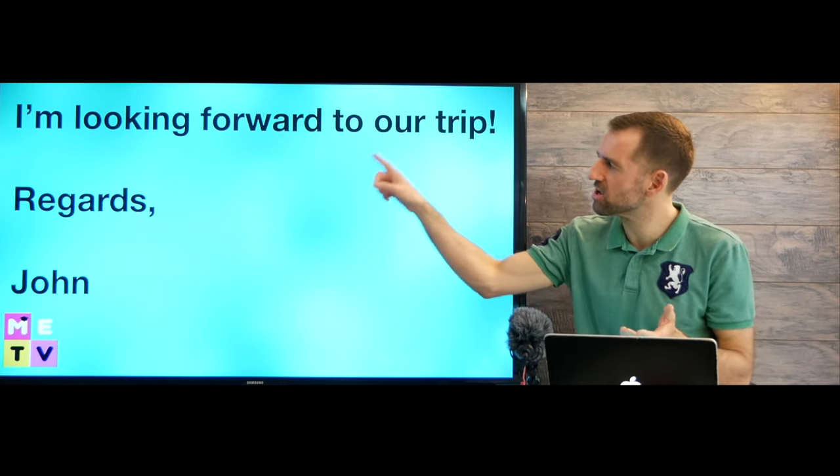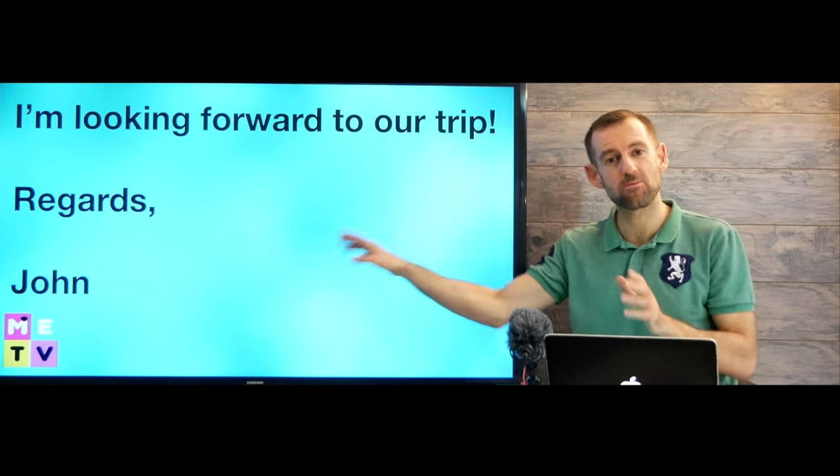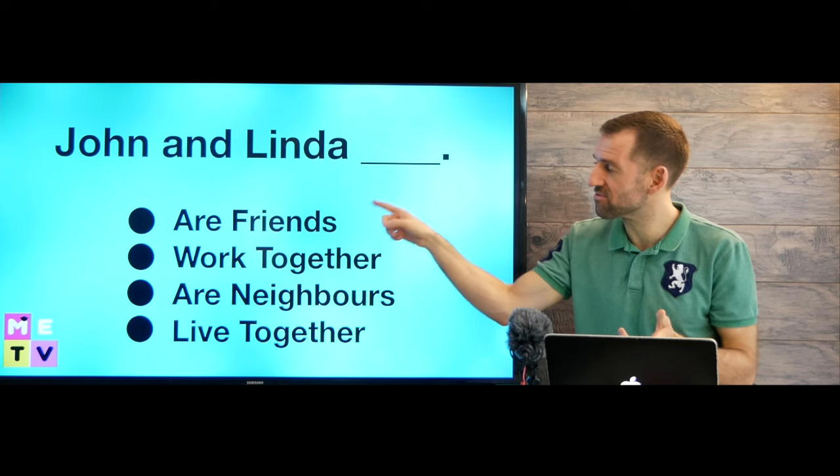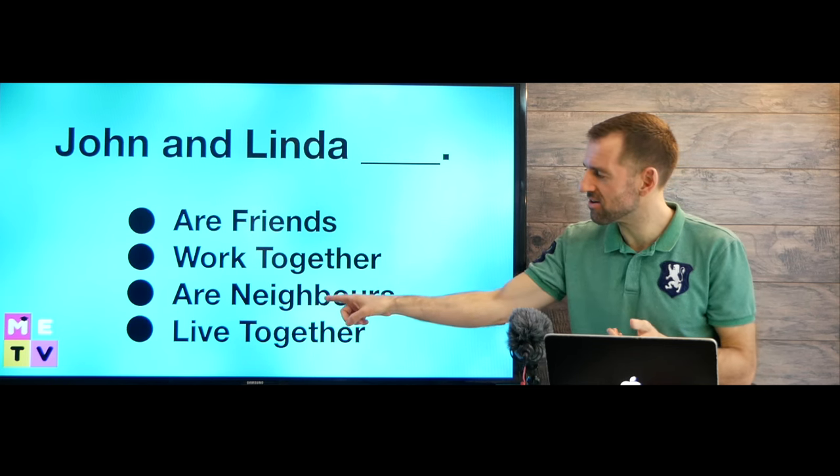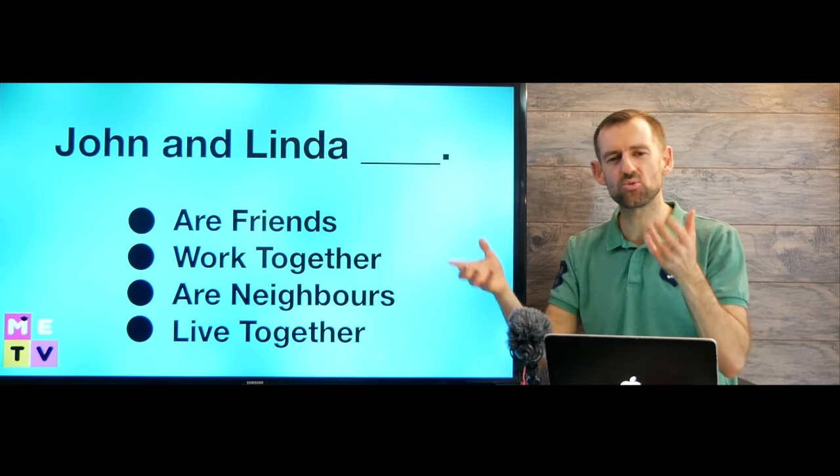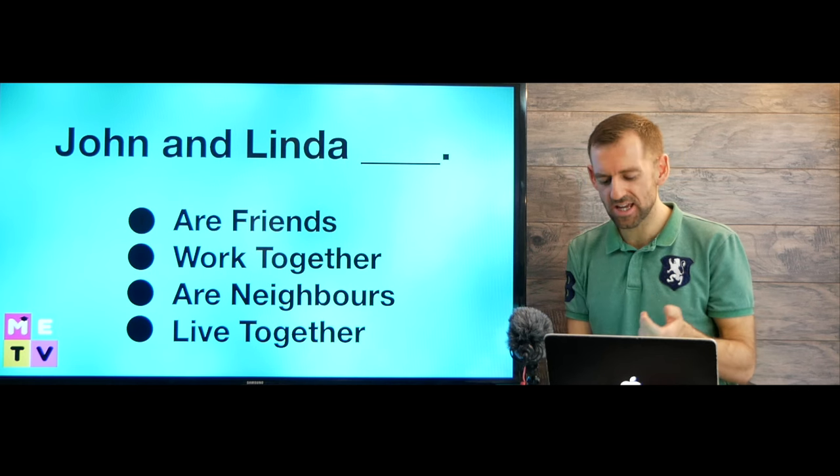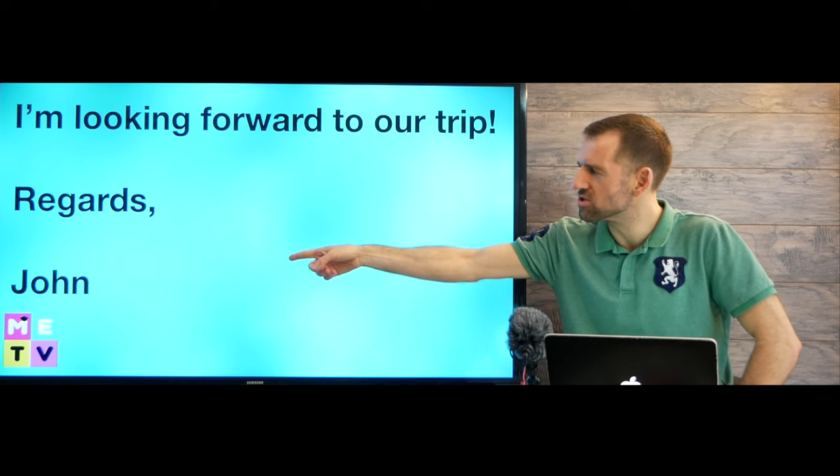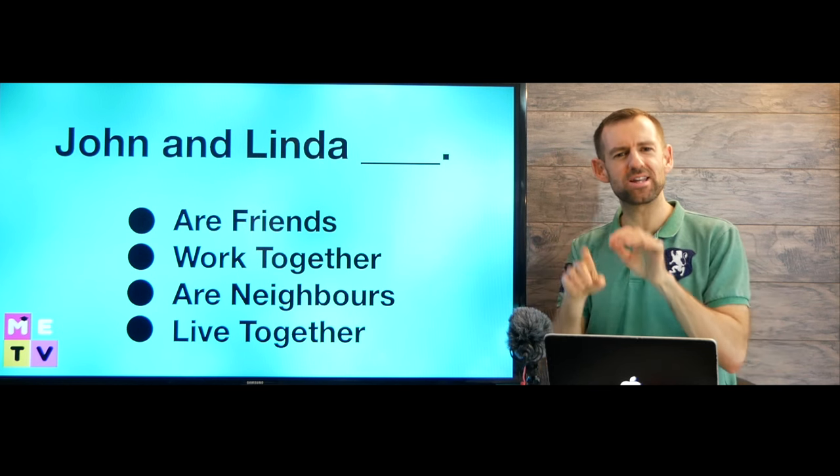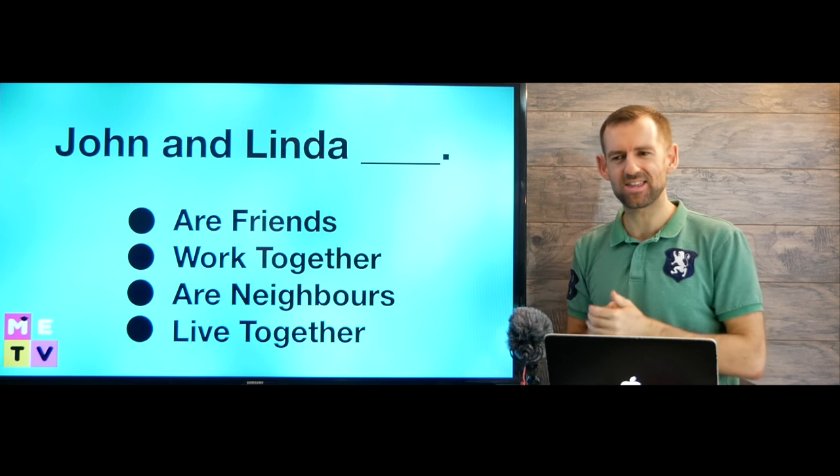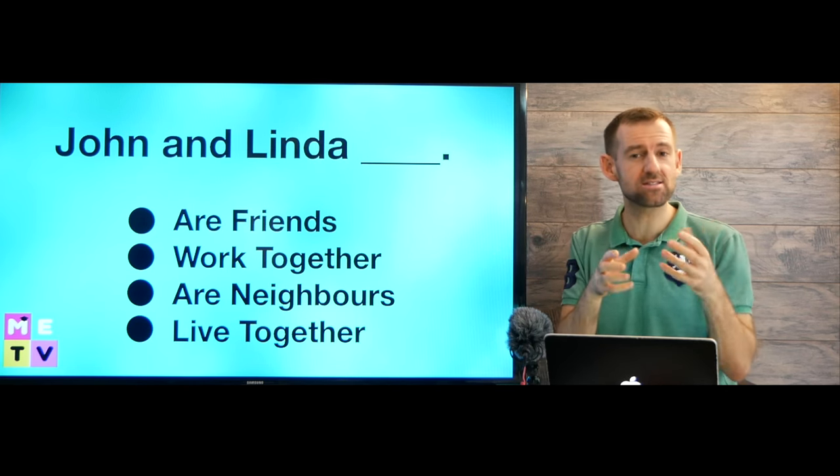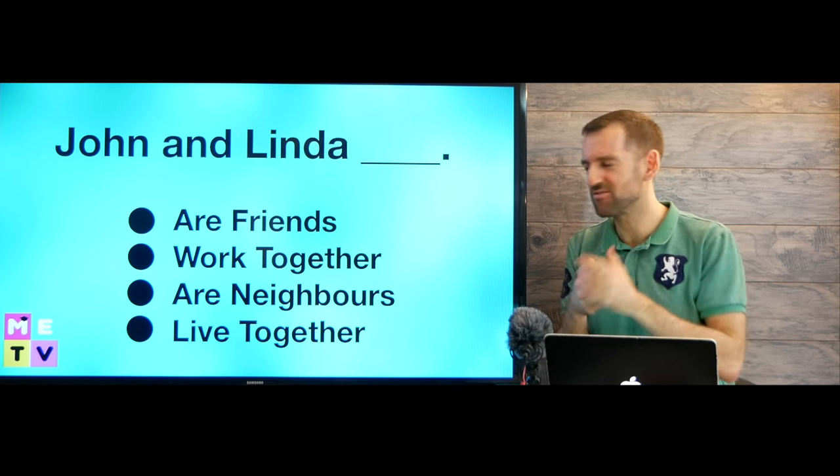Then it just says I'm looking forward to our trip. Regards, John. That's the end of the email. Now it's going to ask, John and Linda are friends, are working together, are neighbors, or live together. Which one do you think is right? What's the relationship between John and Linda? Take a look at this email. Look at how it ended. Regards, John. Is that how friends talk to each other? No, it can't be friends because you don't write an email to your friend saying regards, Mark. That's too formal. So we know from the email that it's a business relationship. I mean, they're probably friends at work, but they're not personal friends.